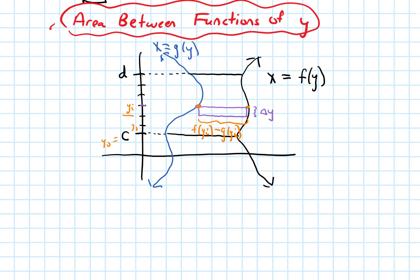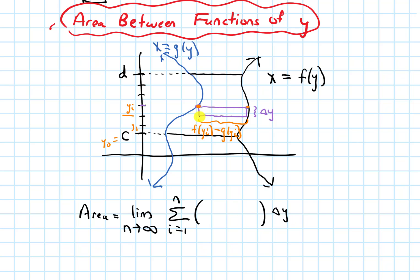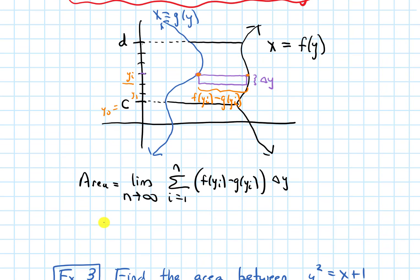My area is going to be a limit as n goes to infinity, because I'm going to take an infinite number of rectangles. Then the sum from i equals 1 to n — now I'm going to have this width of a rectangle, which is delta y, times its length, which is f of y subscript i minus g of y subscript i. The sigma says I'm adding up the area of n rectangles, and the limit says to do an infinite number of rectangles. This limit of Riemann sums we can write as a definite integral.